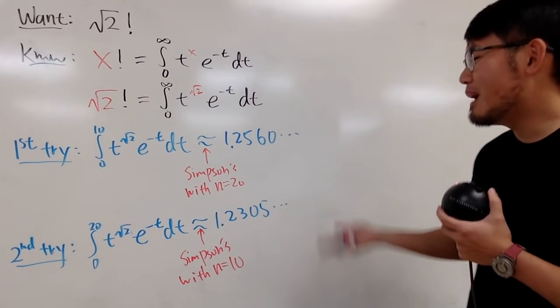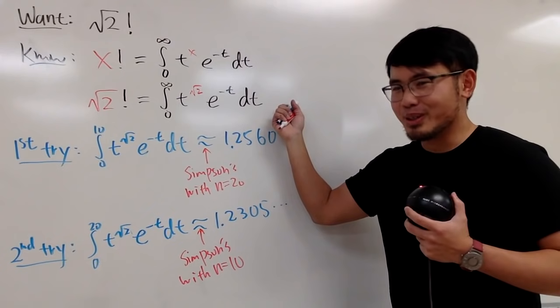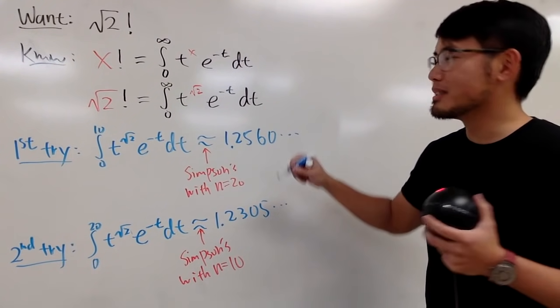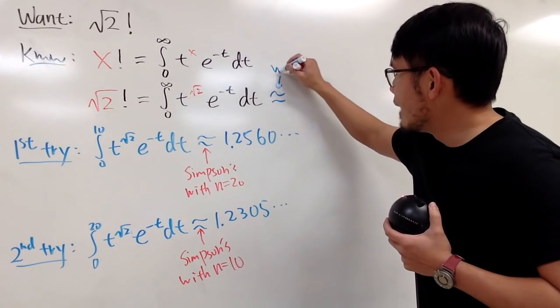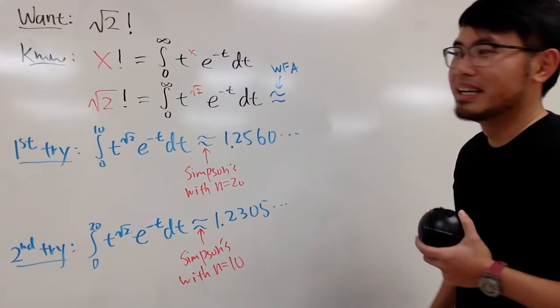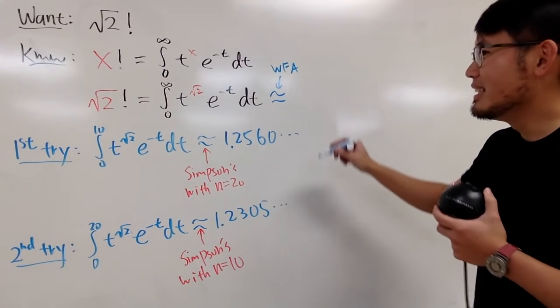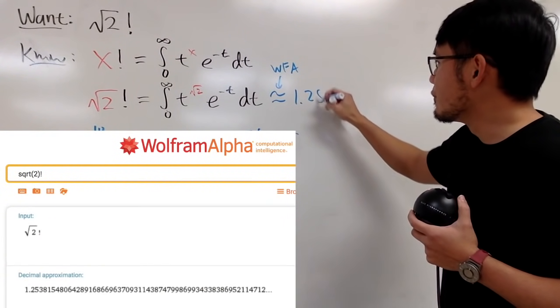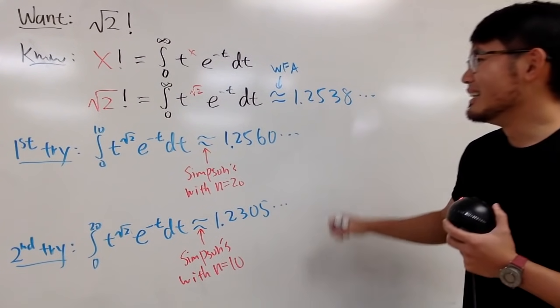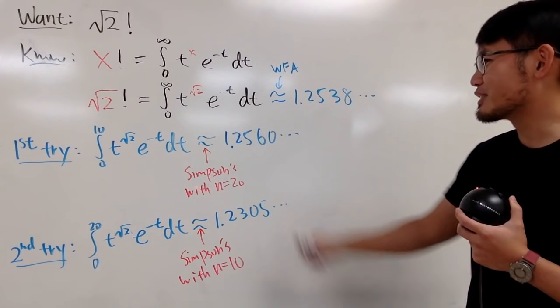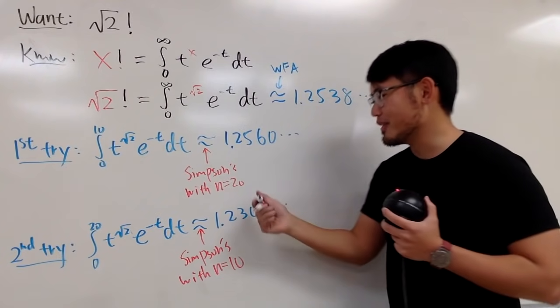Well, of course, you don't know which one is better unless we have the actual answer right here, right? And of course, we will have to use WolframAlpha for this, so I will just put this down by WolframAlpha. The answer that you get on this is approximately 1.2538. So, as you can see, the better of choice is actually this one right here.